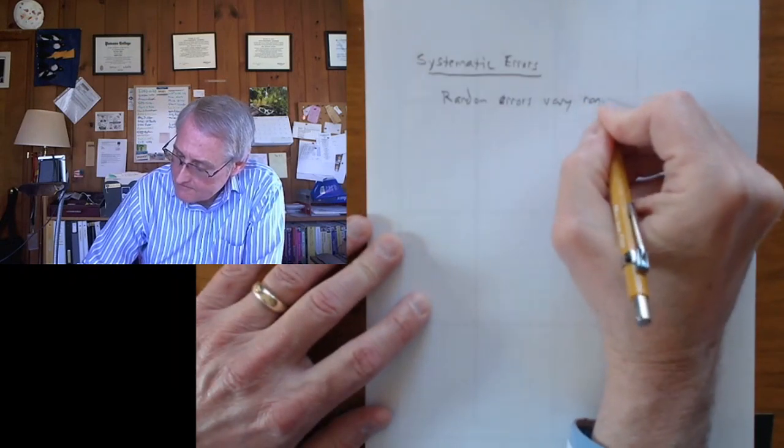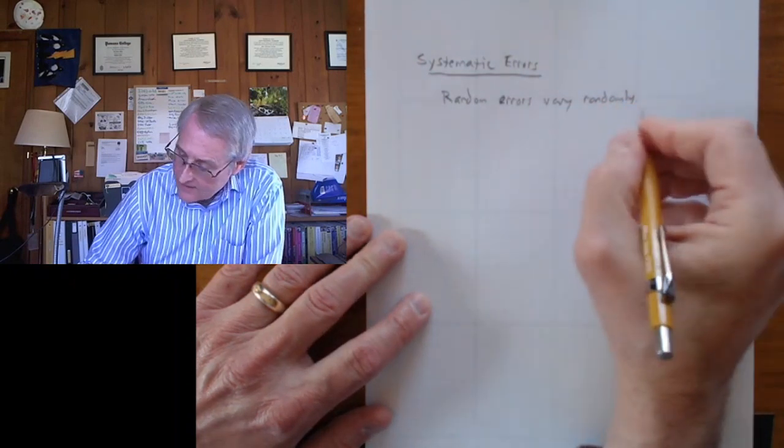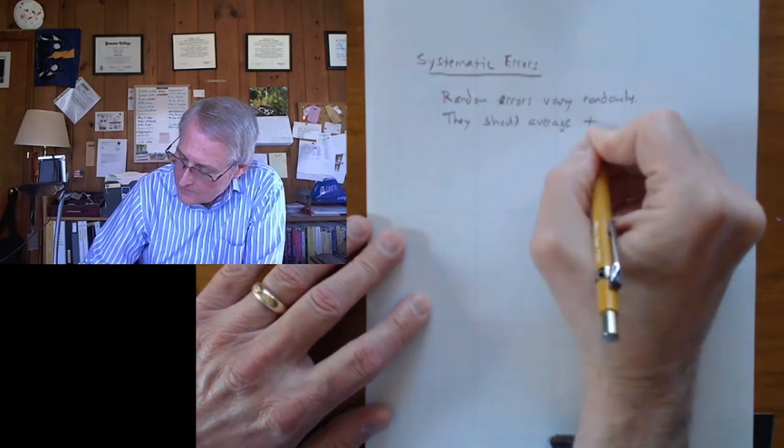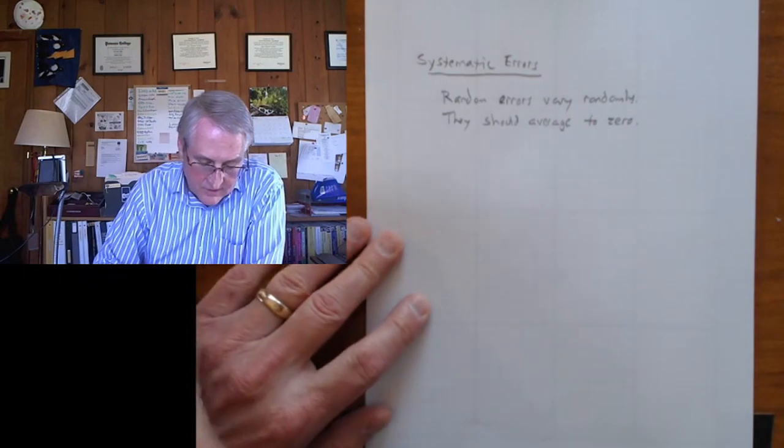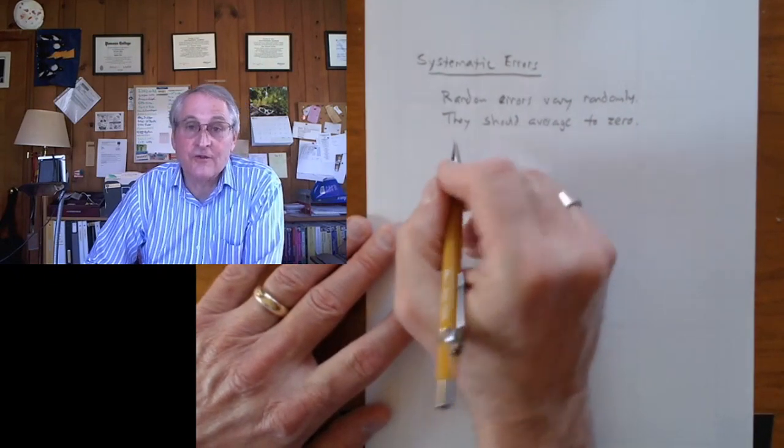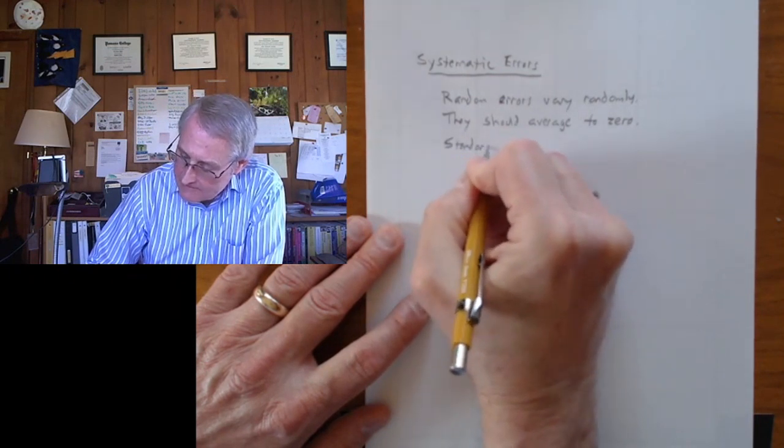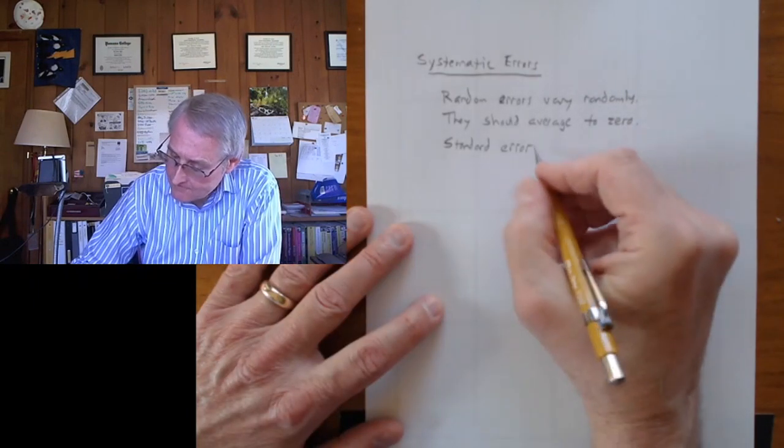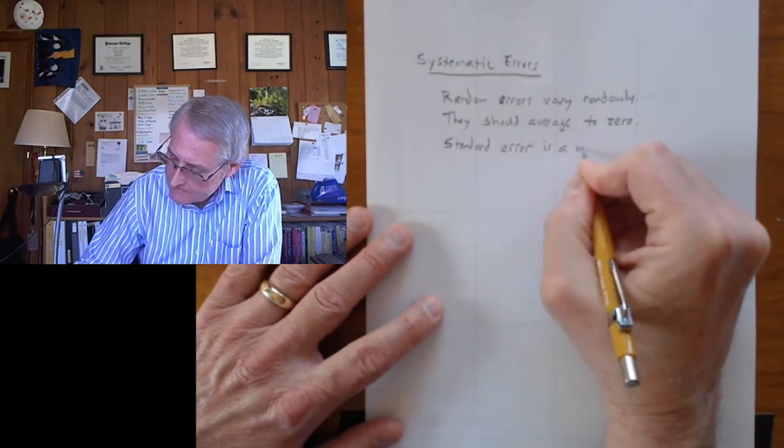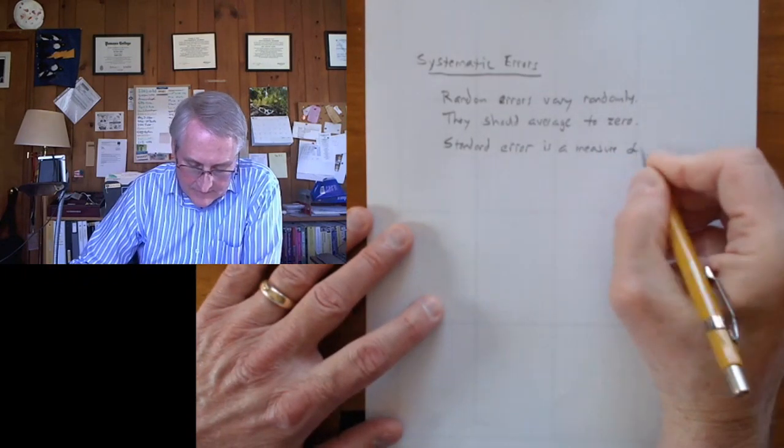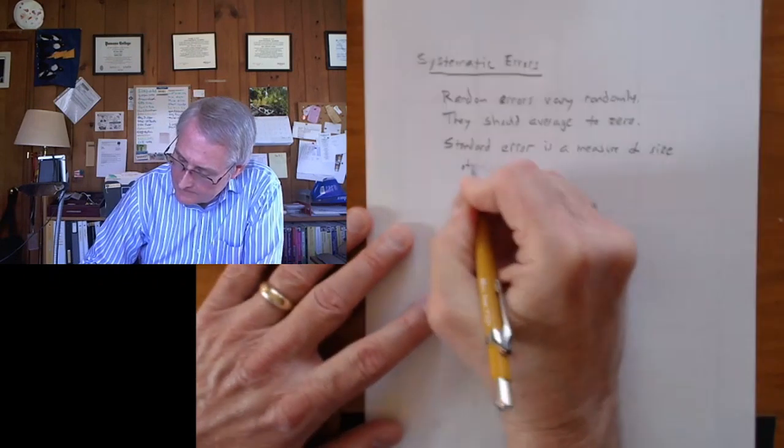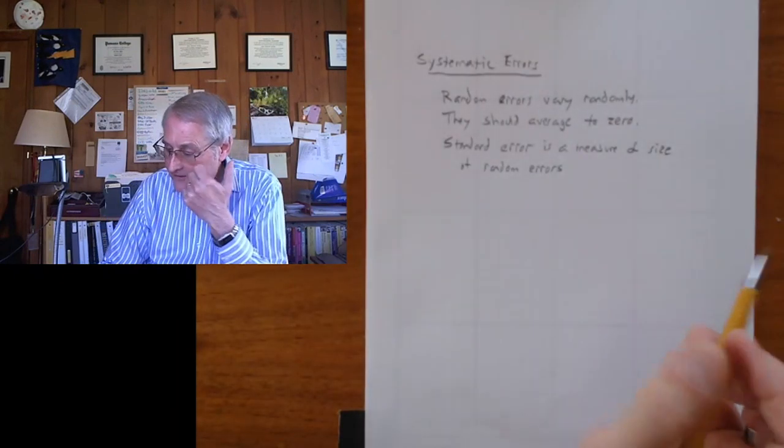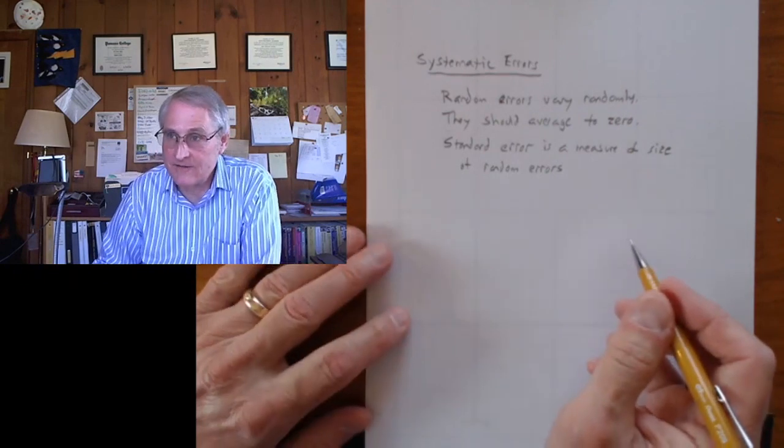So, random errors vary randomly and they should average to zero. And the standard error is a measure of how large those variations are. Standard error, which remember is the standard deviation of the mean. You take sample standard deviation and divide by square root of n. Standard error is a measure of the size of random errors. It's the uncertainty, a quantitative measure of the uncertainty.